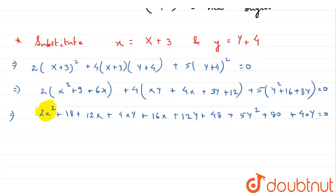So we have 2x square. Then we have 5y square. And then we have 12x, 16x, which gives me a total of 28x. And now we have 12y and 40y, which gives me a total of 52y.